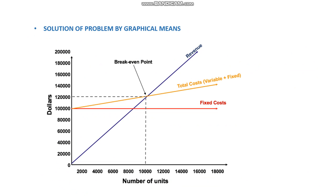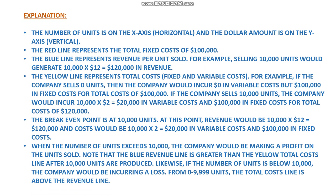This is the graphical solution for the same problem. The x-axis shows number of units and the y-axis shows revenue in dollars. The fixed cost of one lakh dollars is shown in red. The total cost is variable cost plus fixed cost, where variable cost is calculated at two dollars per unit manufacturing cost plus the fixed cost. The intersection of the revenue line and the total cost line gives you the break-even point. This is the stepwise procedure to solve the above problem graphically.